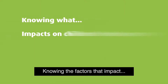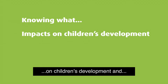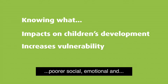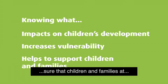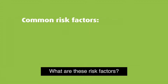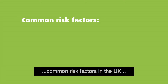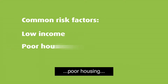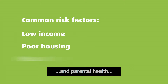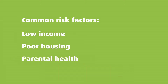Knowing the factors that impact on children's development and increase their vulnerability to poorer social, emotional and cognitive outcomes helps to make sure that children and families at greatest risk get the support that they need. What are these risk factors? Studies have shown that the common risk factors in the UK are low income, poor housing and parental health, particularly maternal health problems.